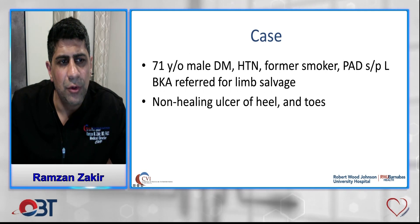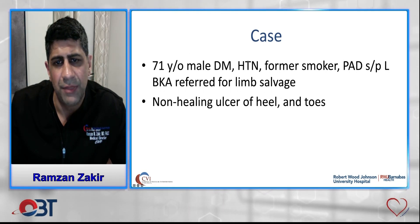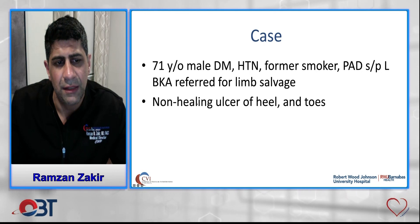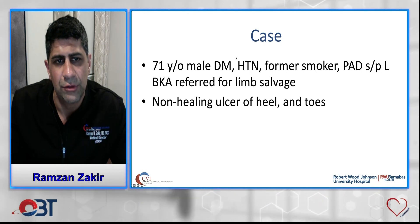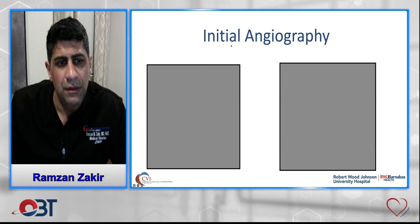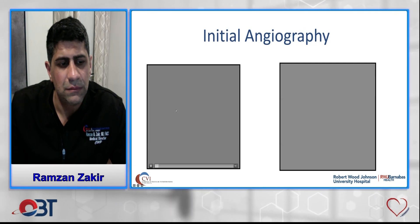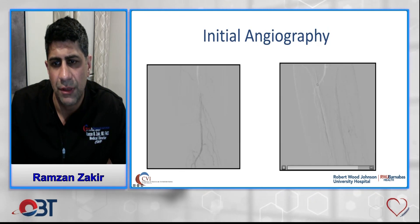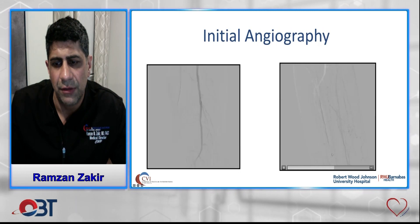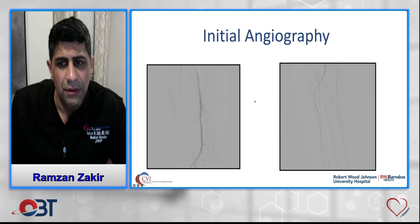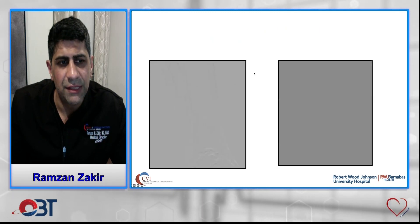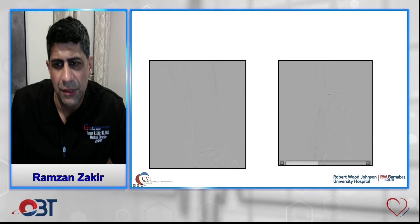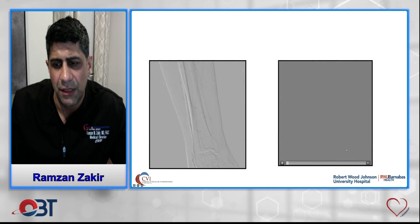Third case: 71-year-old male with diabetes and hypertension, severe PAD, with non-healing ulcers of both the heel and toe — two separate distributions. Initial angiogram shows a flush occlusion of the tibioperoneal trunk and a severely diseased anterior tibial artery that later occludes. We were able to revascularize the anterior tibial artery from an antegrade approach and confirm true lumen with visualization of the plantar arch on injection.